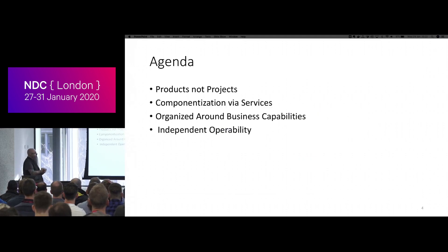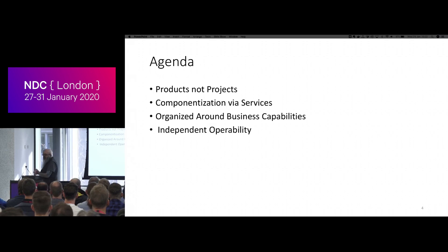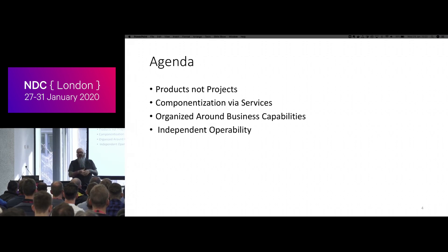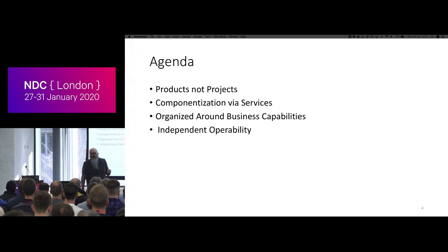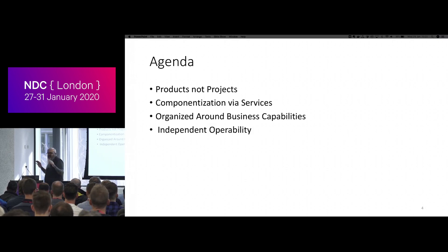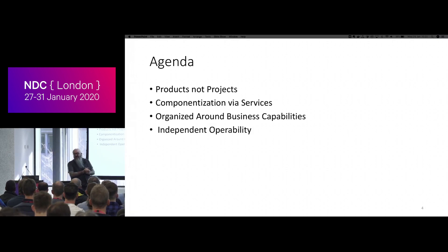Today's agenda: we'll talk about products versus projects, which is key to understanding what microservices are about. Then we'll get into componentization via services, describing the characteristics of a microservice important for creating partitions. Then we'll talk about organizing around business capabilities — Fowler and Lewis in their original paper said microservices are organized around business capabilities, and we'll unpack what that means. We'll also mention bounded context and why that's a bit of a red herring, and finish with independent operability.